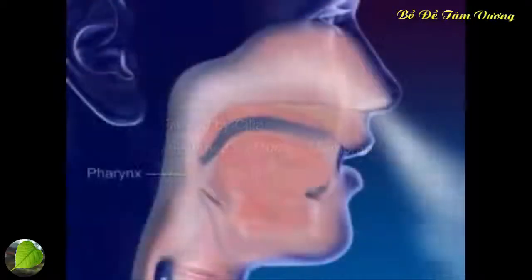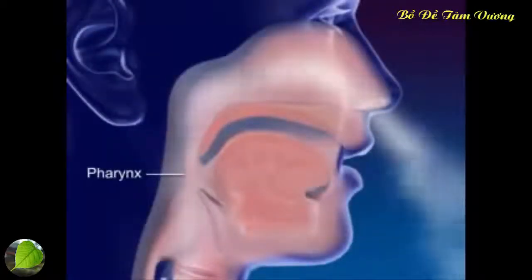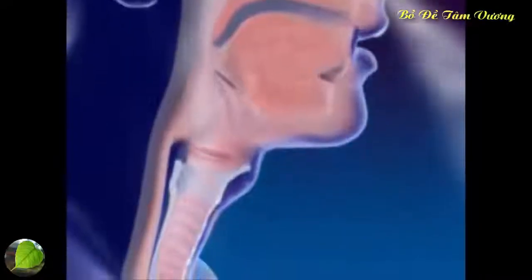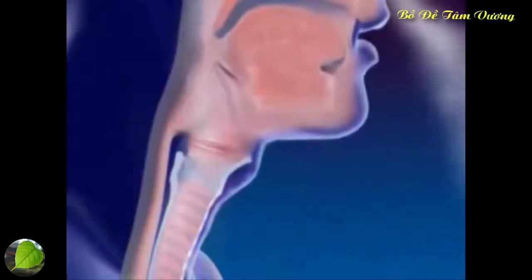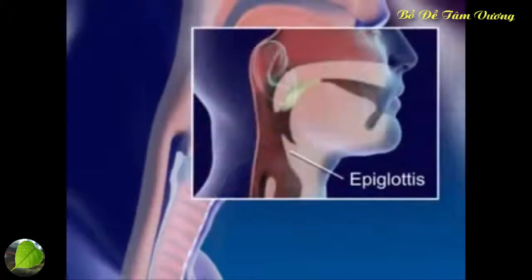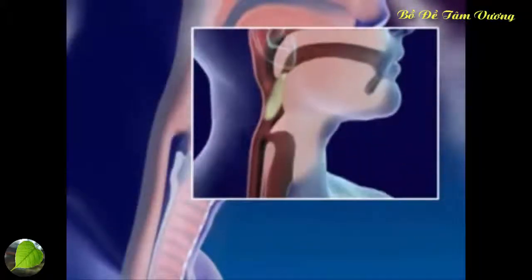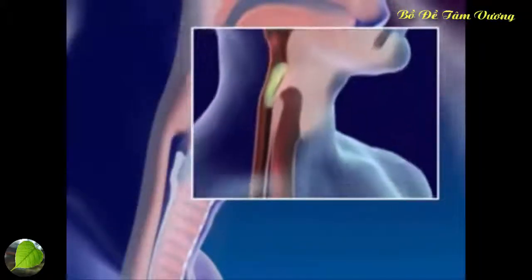Air moves into the pharynx, or throat, the common passageway for food and air. Air continues on to the larynx. The epiglottis, a flap of tissue in front of the larynx, closes off the larynx when swallowing to prevent food from entering.